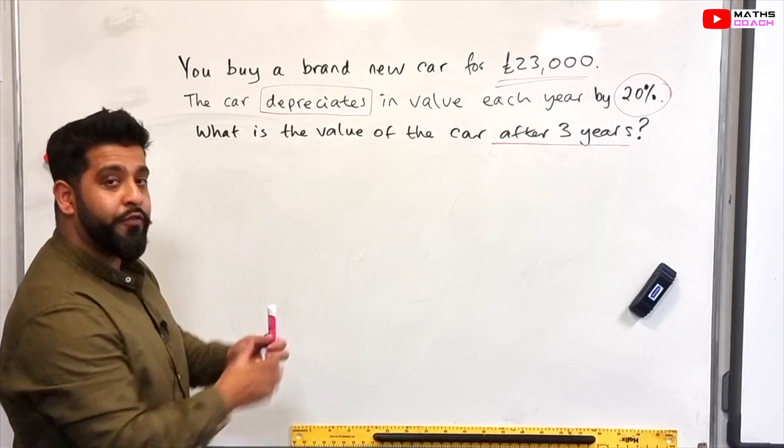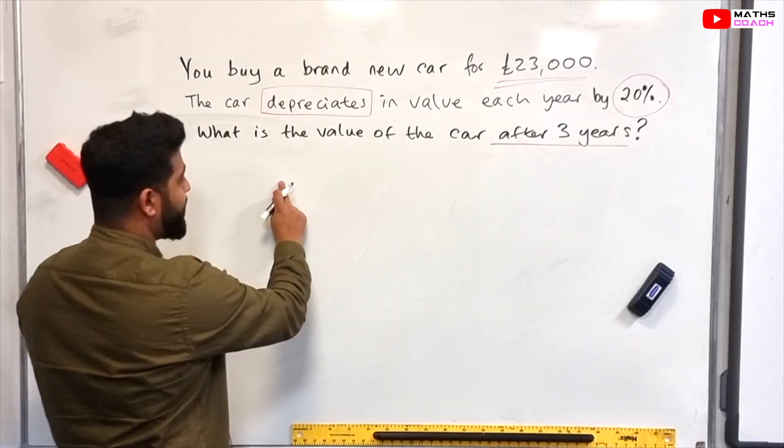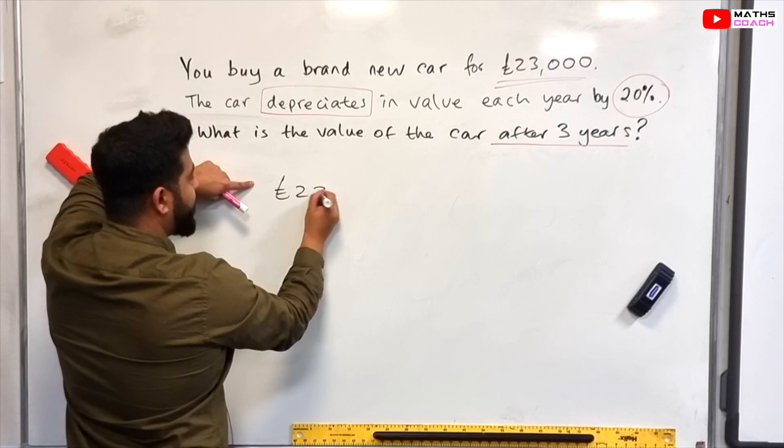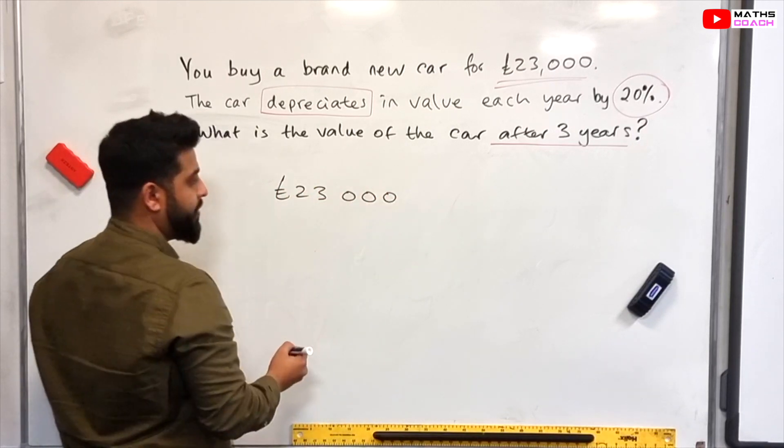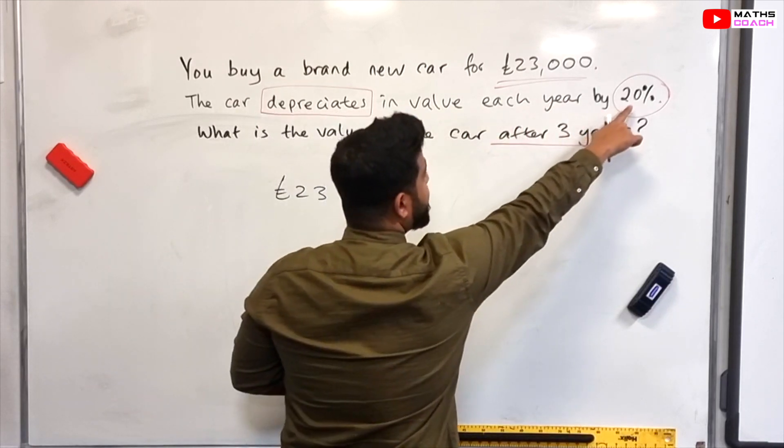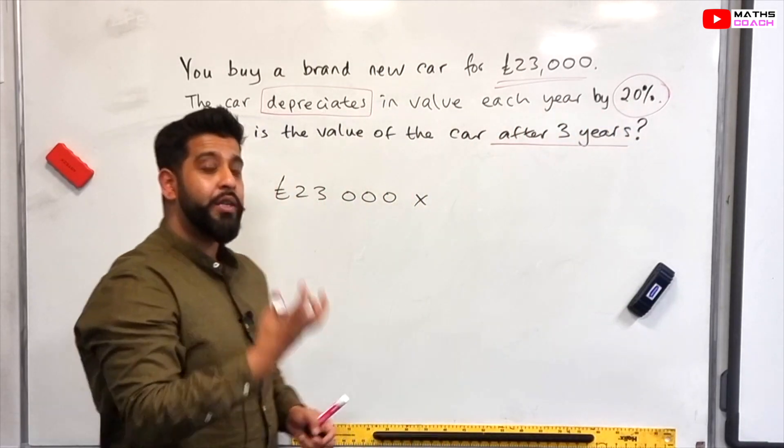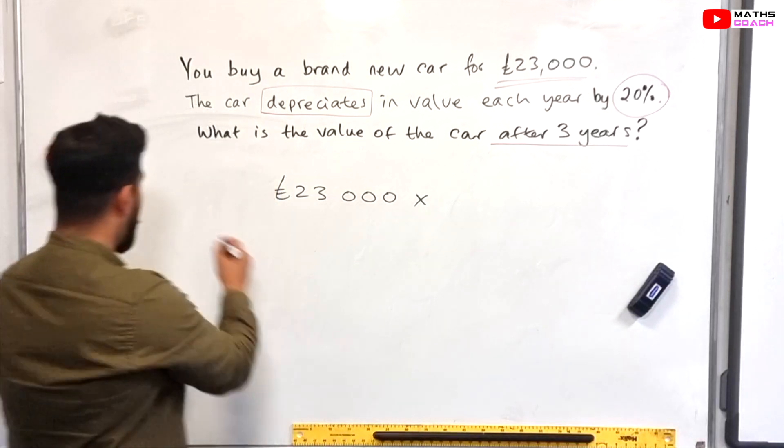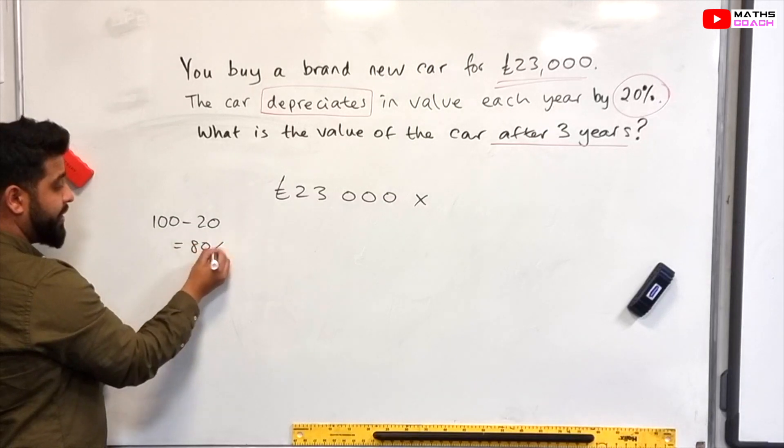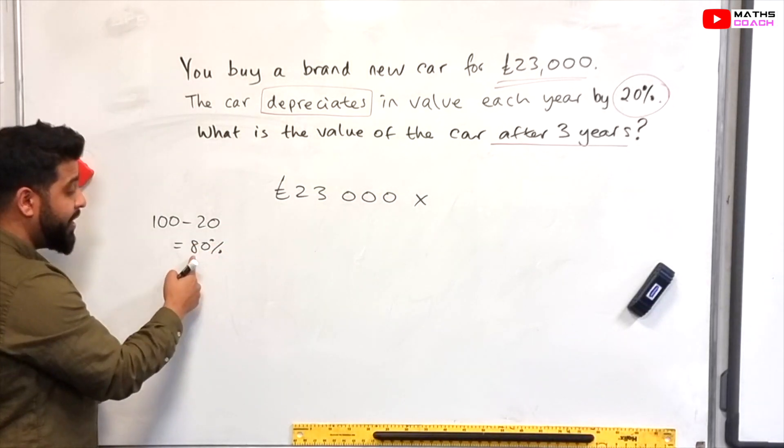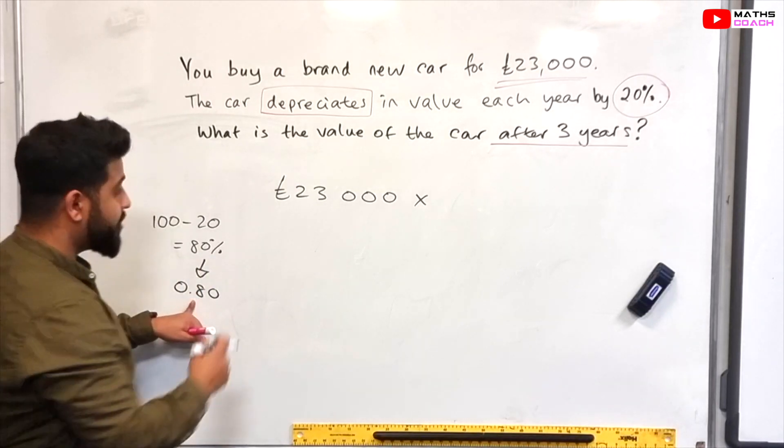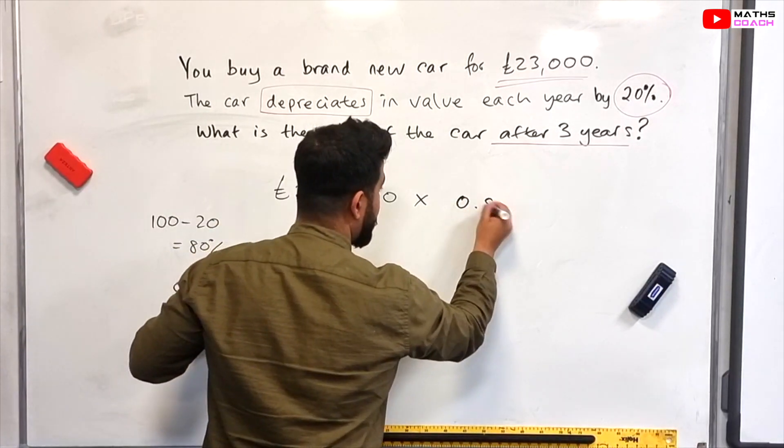Let's go back to our formula. Original amount times by the multiplier. So the original amount is going to be 23,000 and we're going to times this by our multiplier. So what is our multiplier? If the car is depreciating, decreasing by 20% each year, our multiplier is going to look like this: 100 minus 20 which is 80%. So the multiplier would be 0.8 because we divide that by 100. So our multiplier is 0.8.